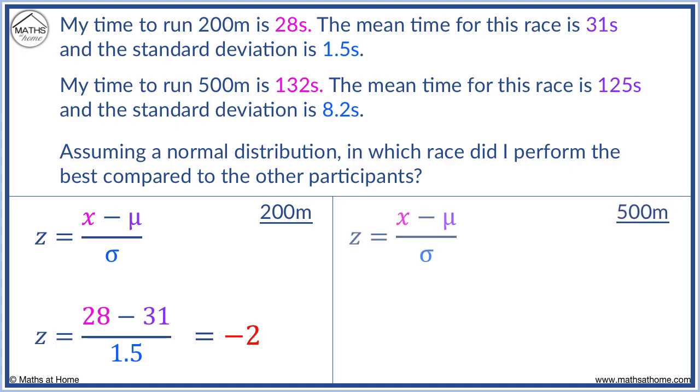For 500 metres, my score was 132. Mu was 125 and sigma was 8.2. The z-score for 500 metres was 0.854.